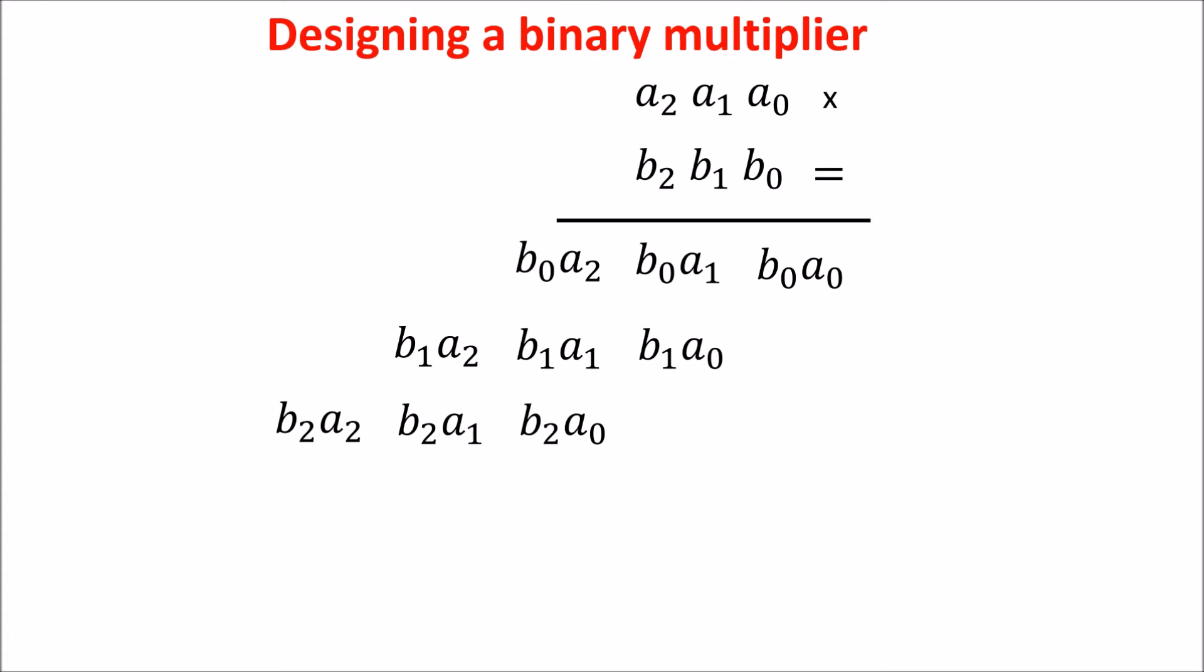Now that we have the partial product, we have to add them to obtain the final product. So, P0 is equal A0 times B0, and P1 is equal B0A1 plus B1A0, and so on.